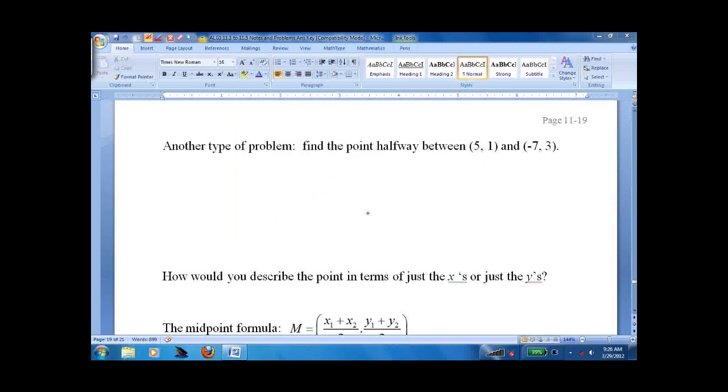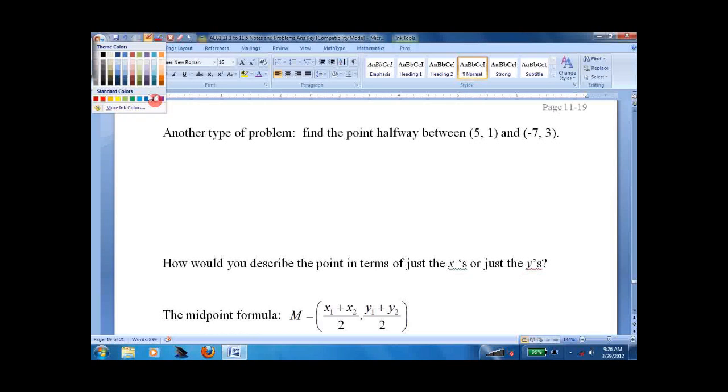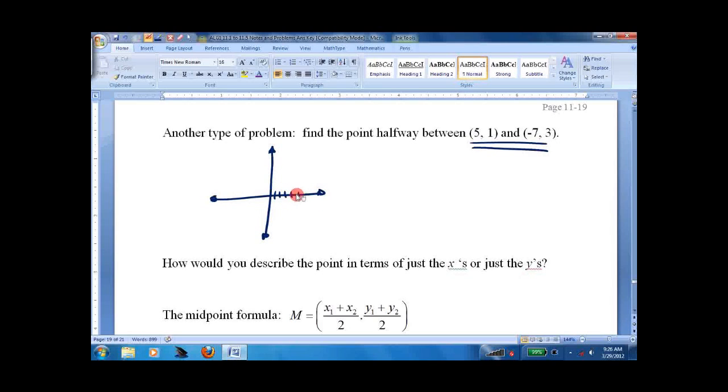Now a slightly different problem. Sometimes we want to find a halfway point between these two. So again, let's graph it and see what happens. This is (5,1), this is (−7,3). If I had a guess, I would say it's about here. It's about halfway between those two points. Well, how do we find it precisely? We're finding the average of 5 and −7.